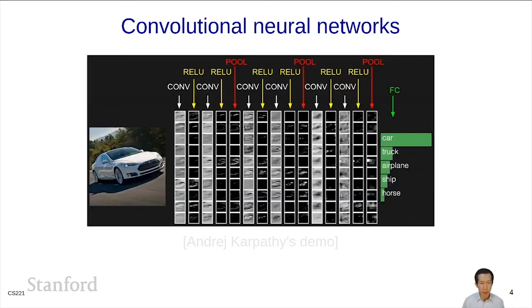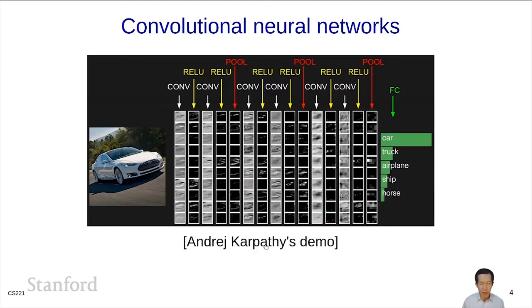Here is an example of a ConvNet in action. Here's a car, and you can see that it goes through a number of layers. Over time, it computes increasingly abstract representations of the image. At the end, you get a vector representing the probabilities of the different object categories. If you want to play with ConvNets, you can click here for Andrej Karpathy's excellent demo where you can actually create and train ConvNets in your browser.